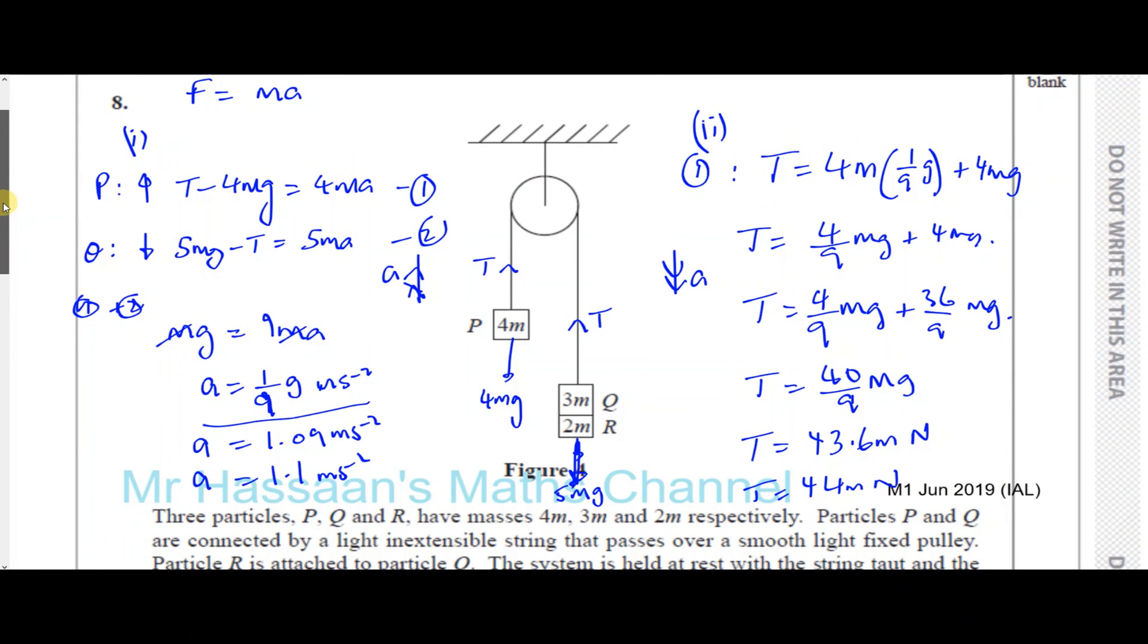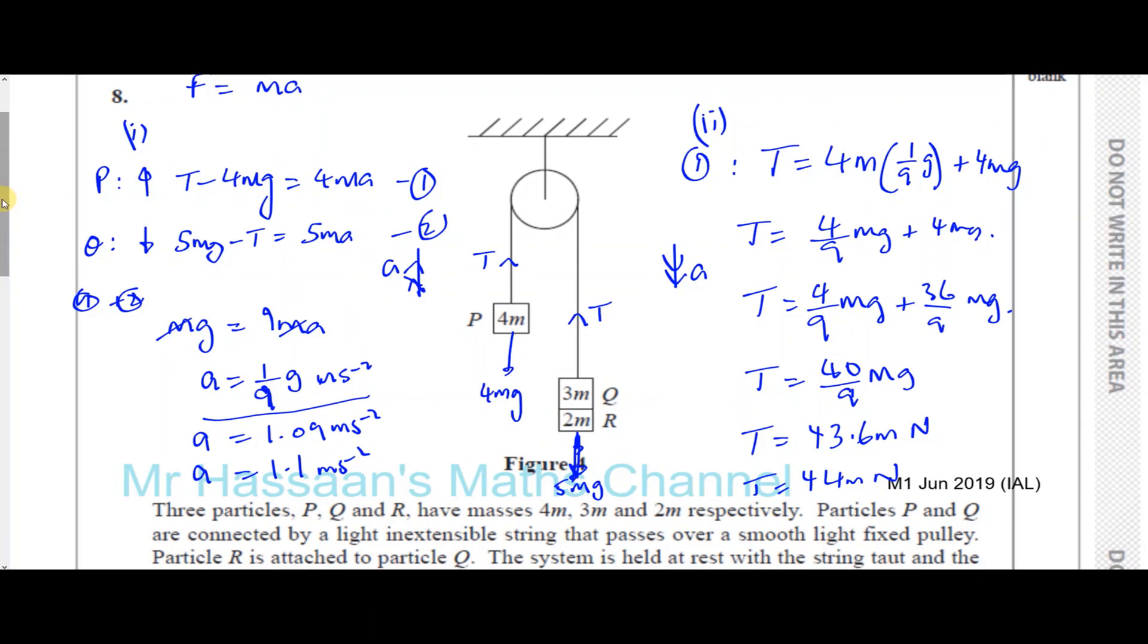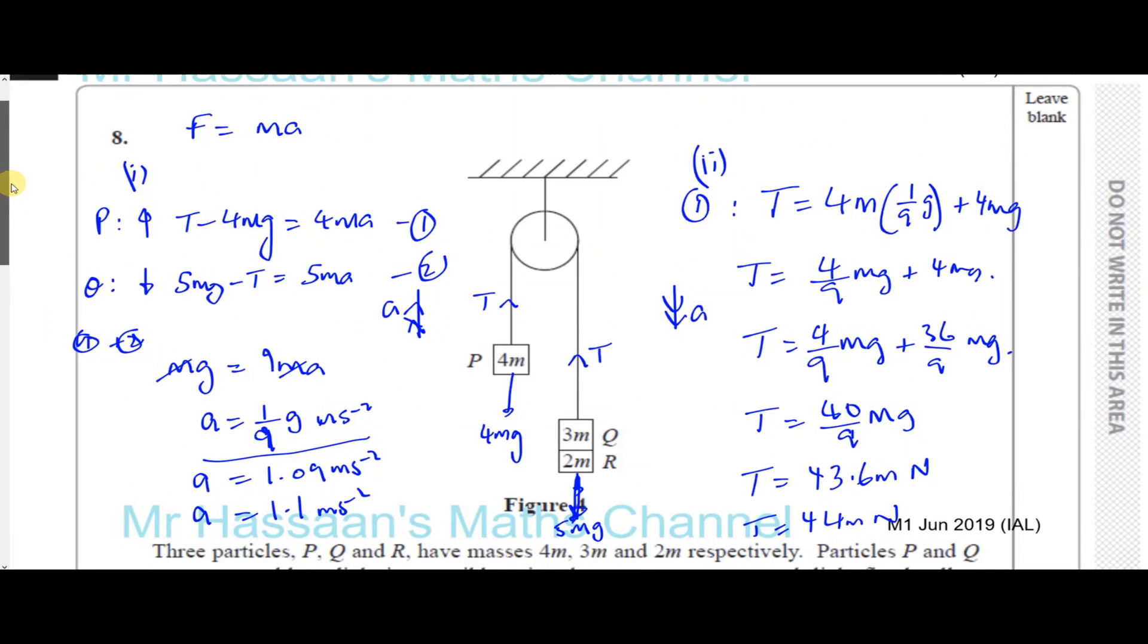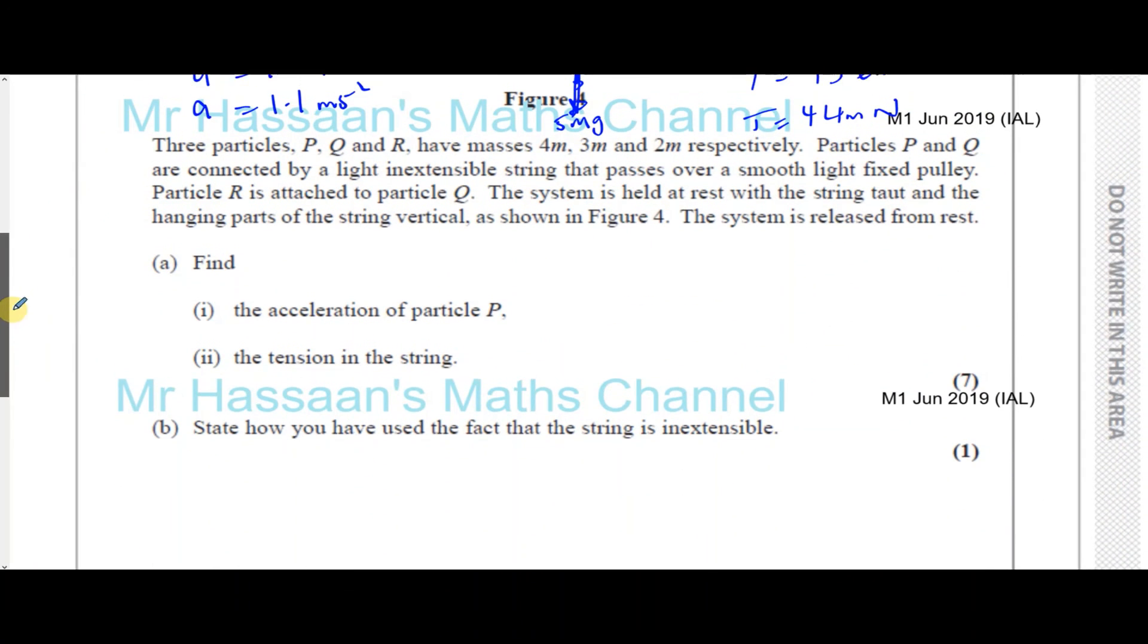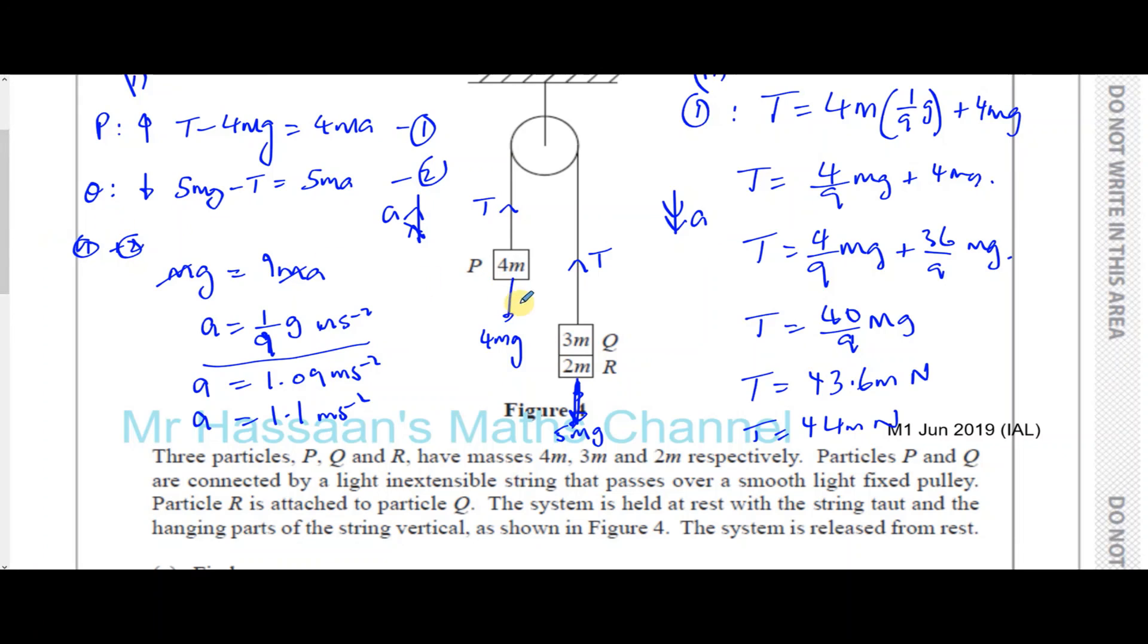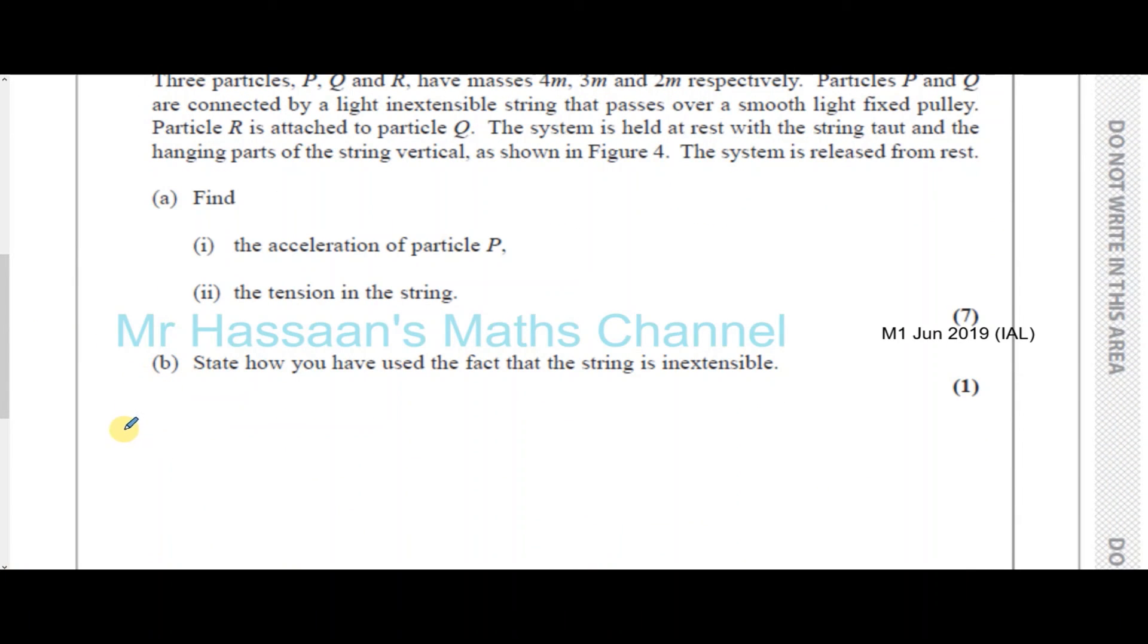Then part B says, state how you have used the fact that the string is inextensible. I kind of mentioned that. The fact that it's inextensible is used because if it's inextensible, then everything attached to that string will have the same acceleration. So for part B we can say that all the particles will have the same acceleration. It's one mark, I don't have to write an essay about it. And that's fine for part B. So there's the answer to part B. And then I'm going to go on to part C now.